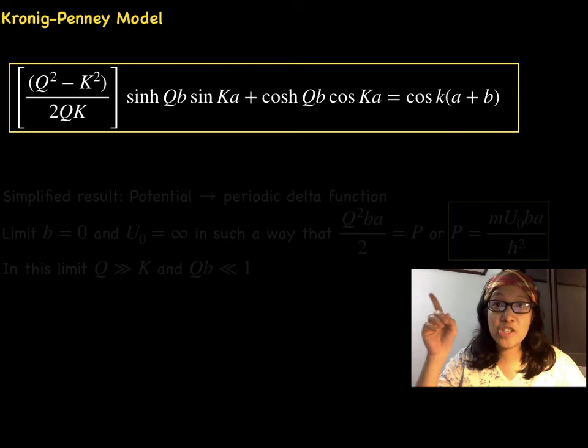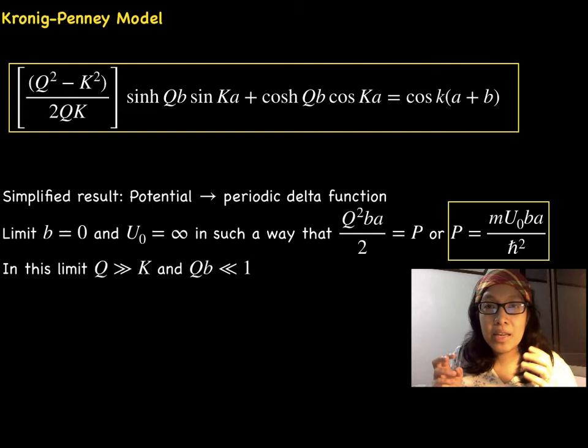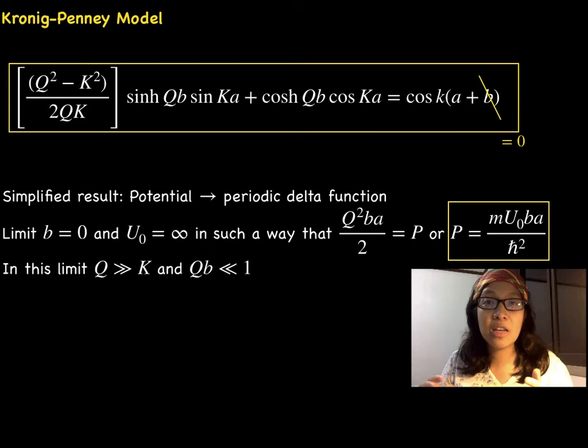If the determinant is zero, we have this equation. The equation is simplified if we represent the potential by a periodic delta function obtained when we pass to the limit b equals zero and potential U₀ equals infinity in such a way that we obtain q²ba/2 equals P or P equals mU₀ab/ℏ².